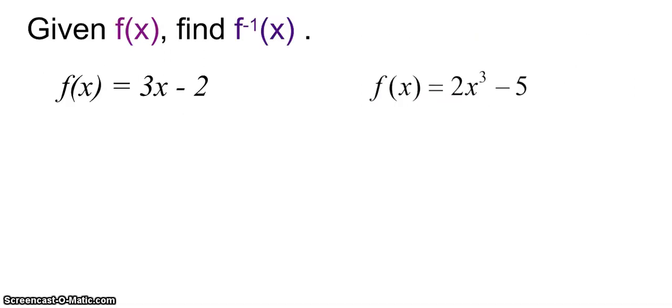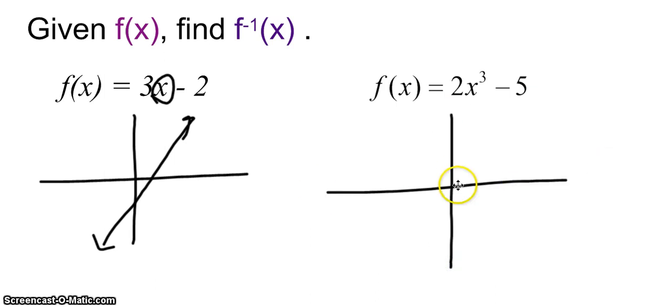Given f(x), find f inverse. We learned last time that a horizontal line test will help us determine if there is an inverse. There's no point in finding it if you don't first know that it exists. So thinking about the graph of 3x minus 2, it's going to be a line that's 3 times taller, move down 2, approximately there. It's our linear function. Well, that's definitely going to pass a horizontal line test. This function over here, we've got 2x to the third minus 5. So we're going to take our cubic function, stretch it pretty tall, and move it down 5. That will also pass a horizontal line test.